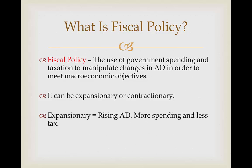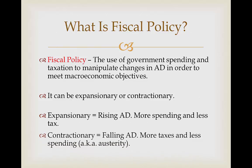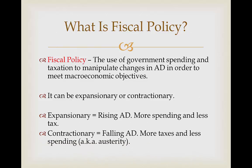Expansionary fiscal policy is where we want an increase in aggregate demand. This involves more government spending and less taxation. Contractionary fiscal policy is a fall in aggregate demand. Here we'll have more spending cuts and more taxes, which is otherwise known as austerity.